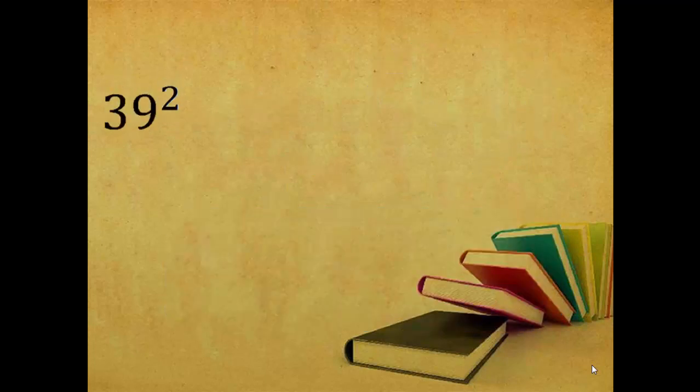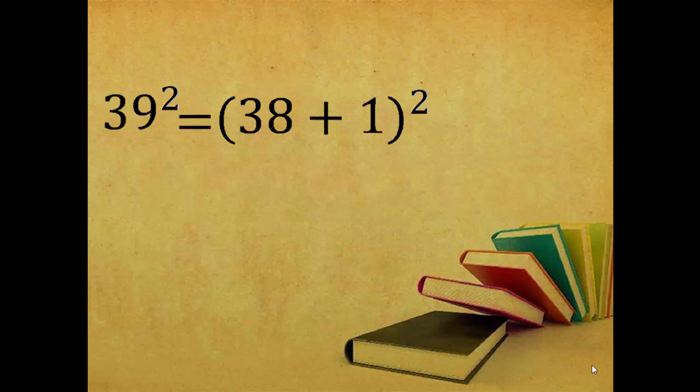Let's further move to the next example. That is, square of 39 is equal to. So let's split up into 38 plus 1 is equal to. The first step is you have to write 1 as it is. So here, 1 is as it is.